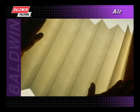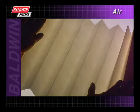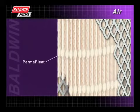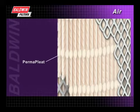Aside from selecting the proper media for each application, Baldwin ensures maximum strength and minimum restriction through its Perma Pleat design. Perma Pleat is a special embossing process which creates built-in pleat spacing in the media, adding extra stability and separation to prevent incoming air from causing pleats to bunch together.